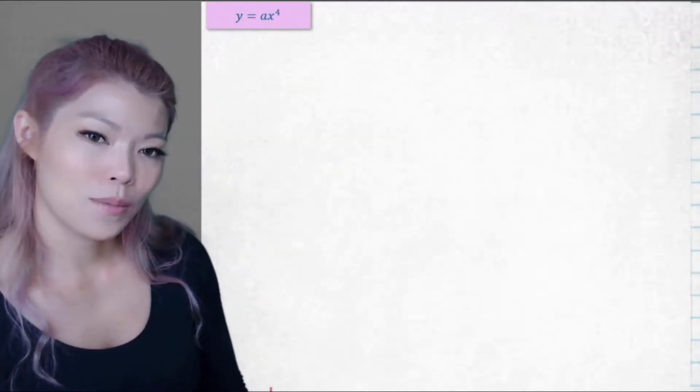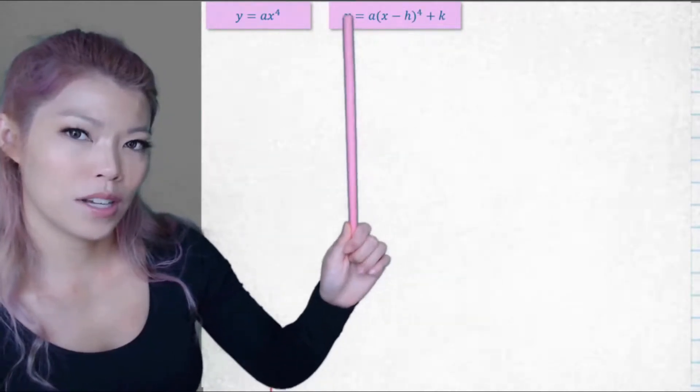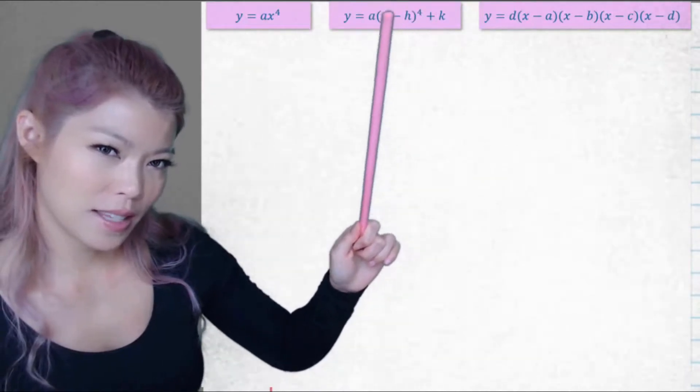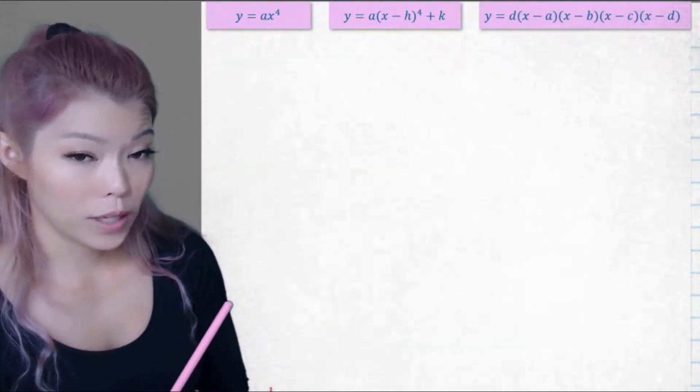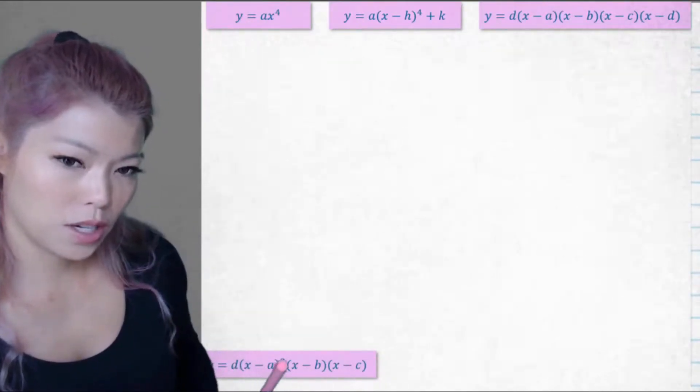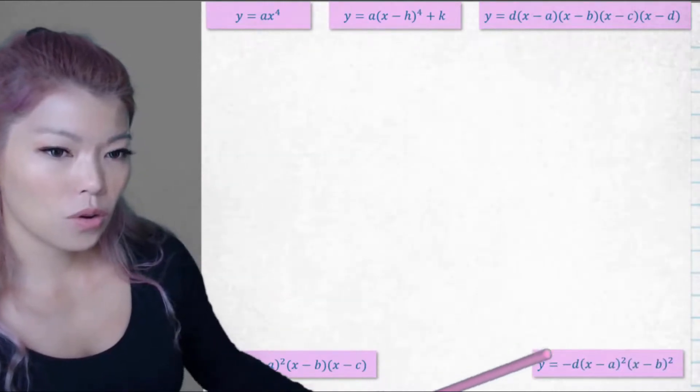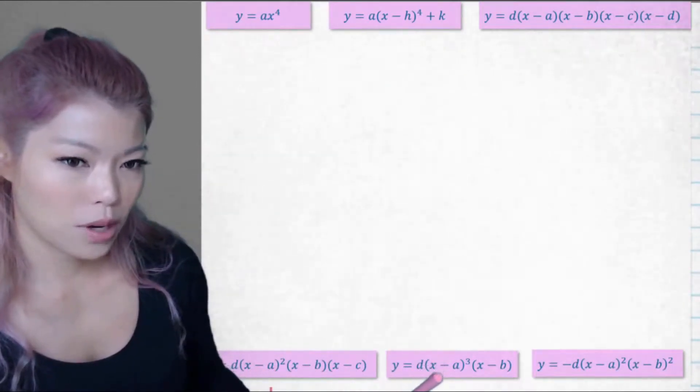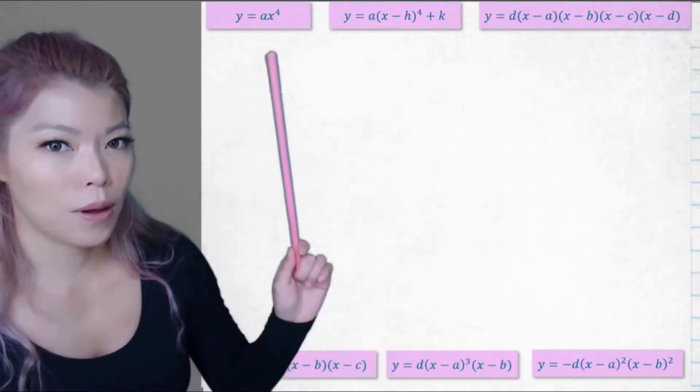Here we have y equals ax to the power of 4, and it can be written in the point of inflection format or turning point format from quadratics, that same setup, or it can be written as 4 intercepts, or a combination of turning point and intercept, intercept where the turning point is on the x-axis, or turning point and turning point or point of reflection and just an x-intercept because it's power of 4.